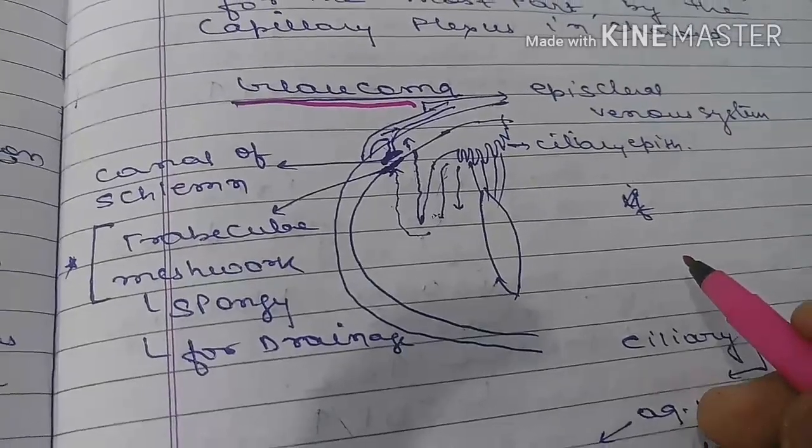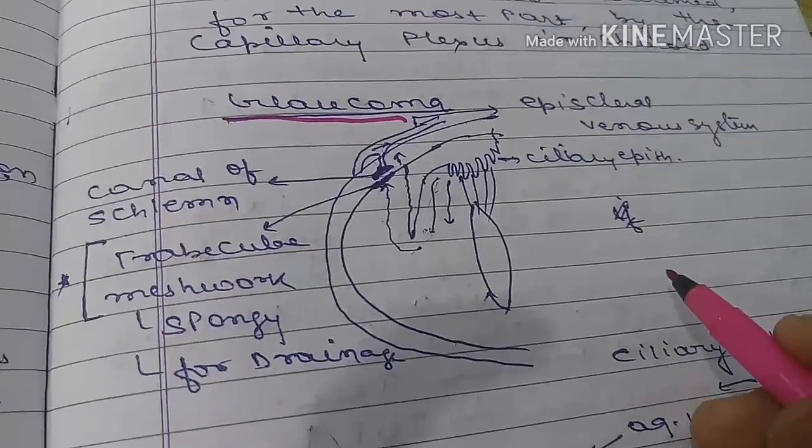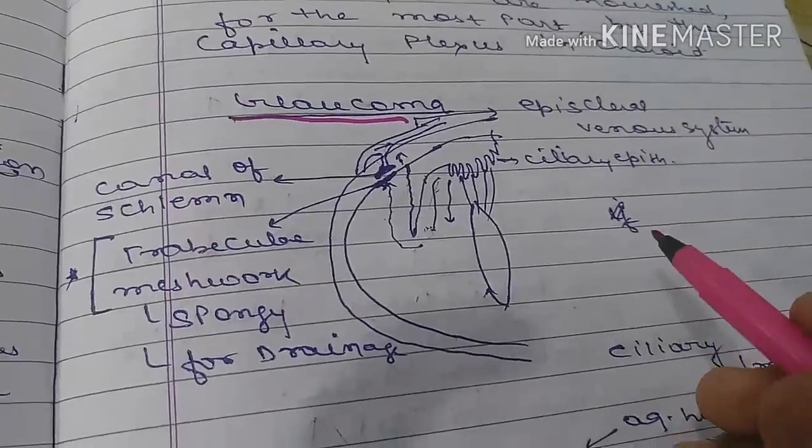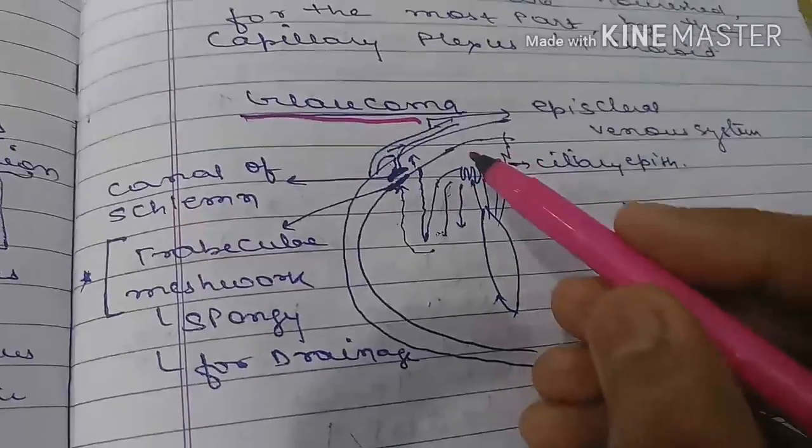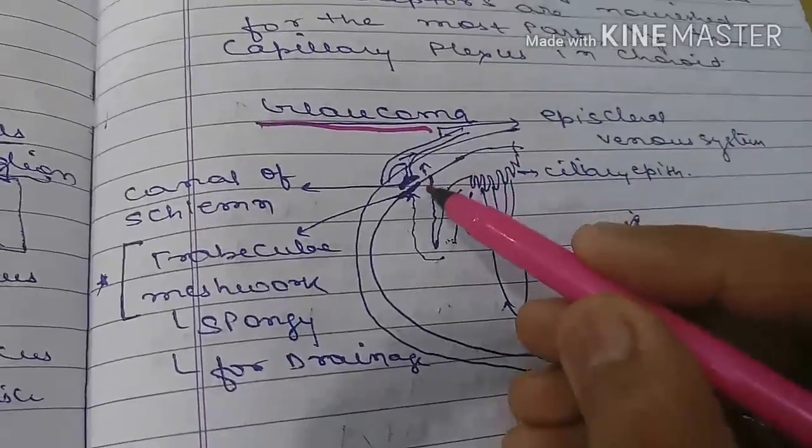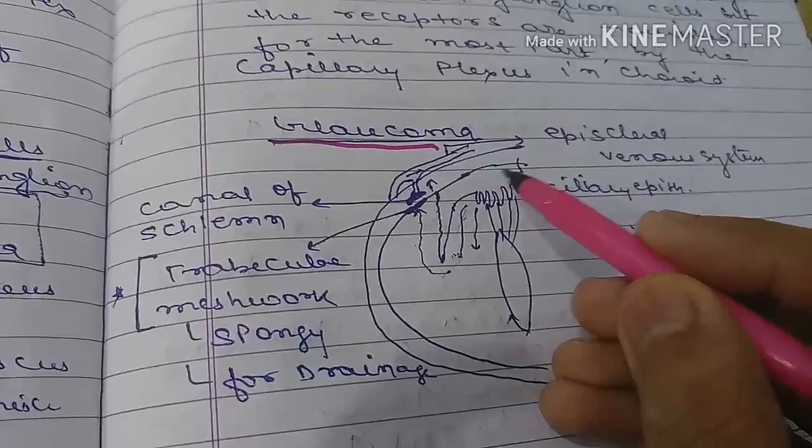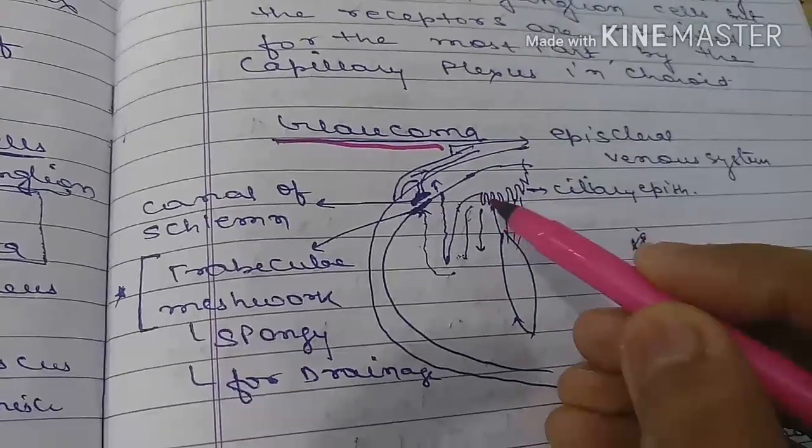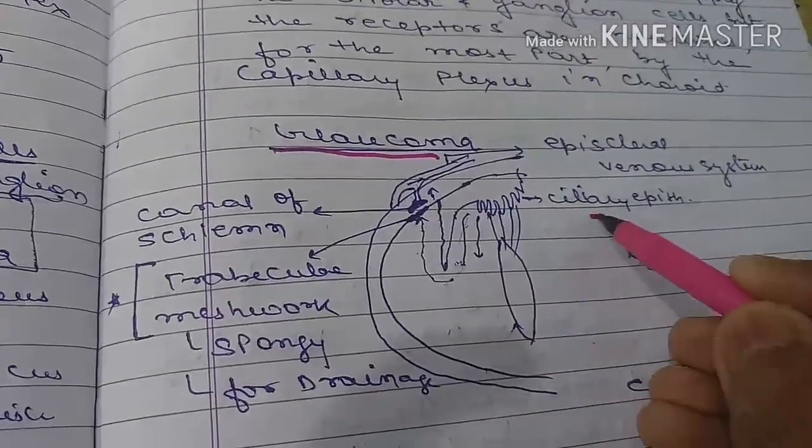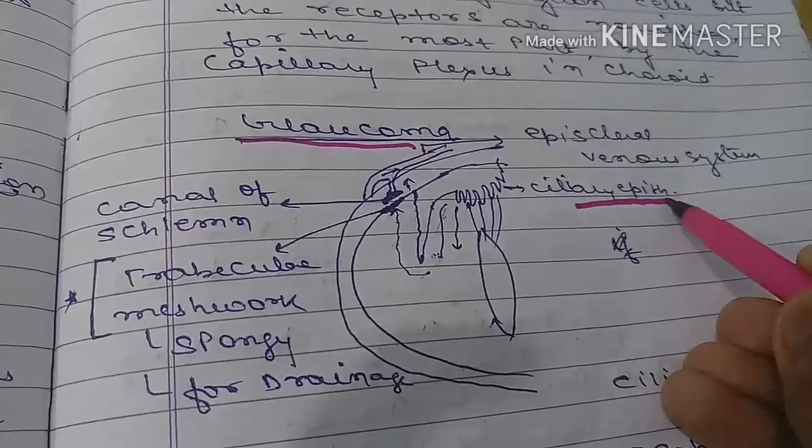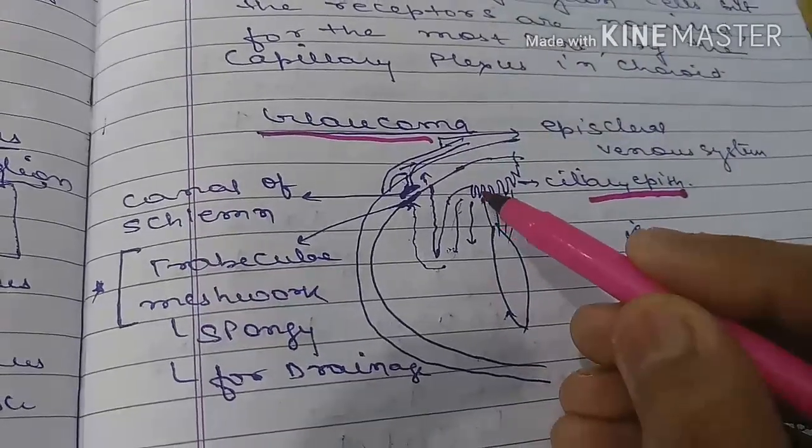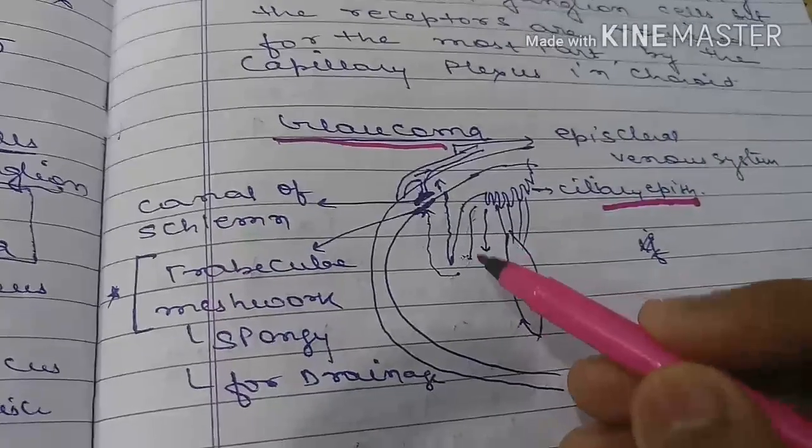Hello friends, today we are going to discuss glaucoma. You can see the general structure: this is the ciliary body and this extension is known as the ciliary epithelium. The ciliary epithelium is responsible for the formation of aqueous humor.